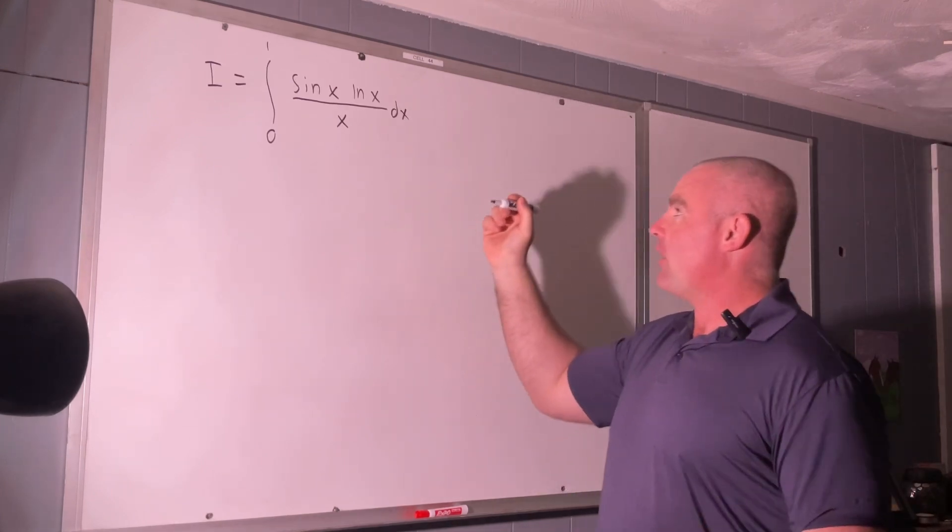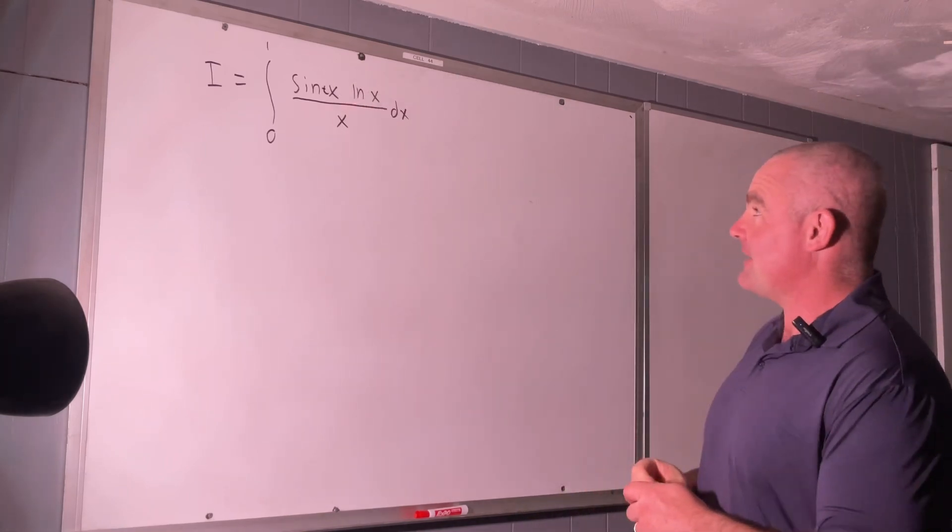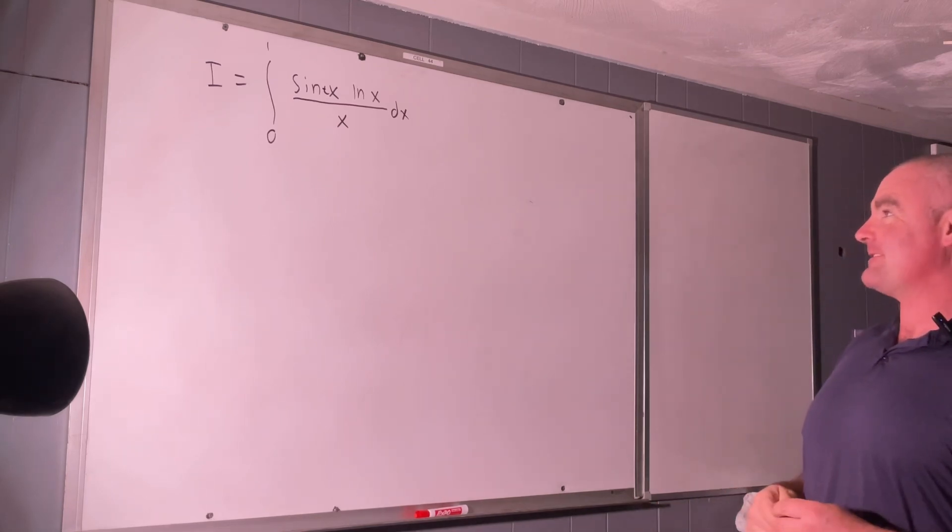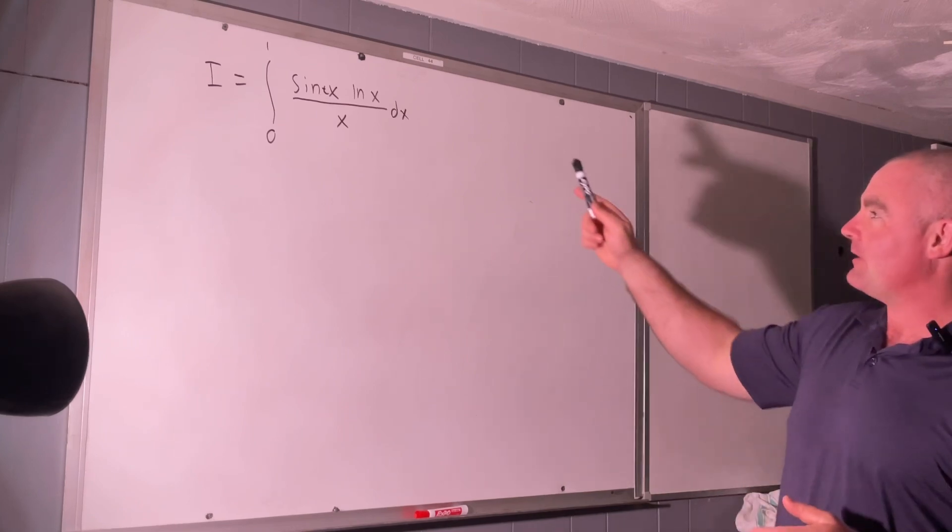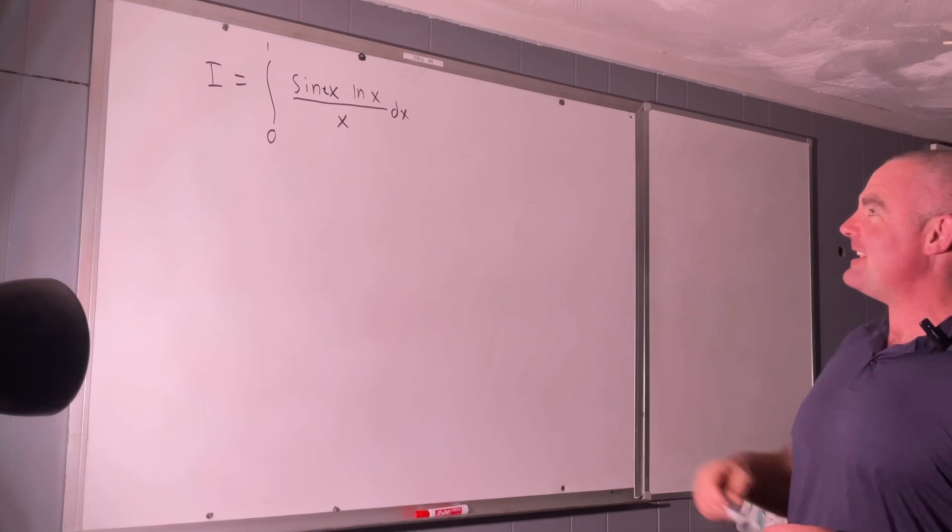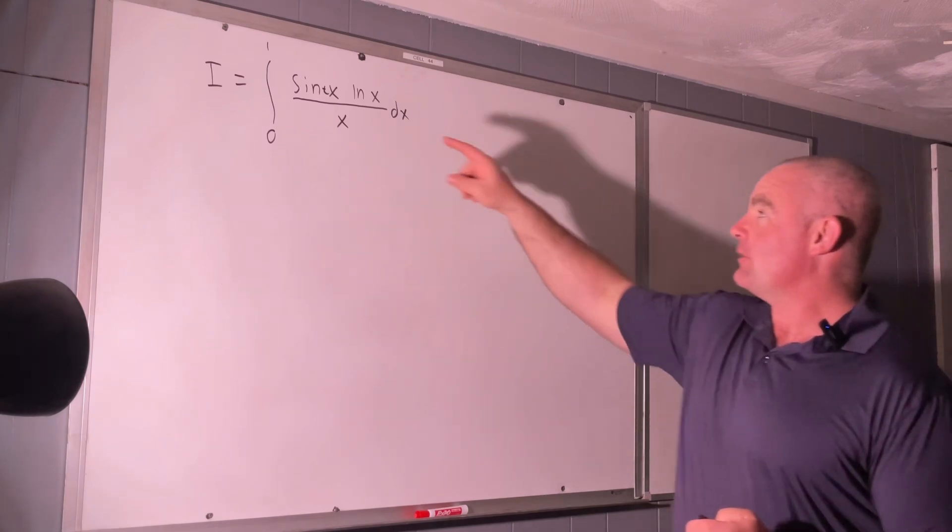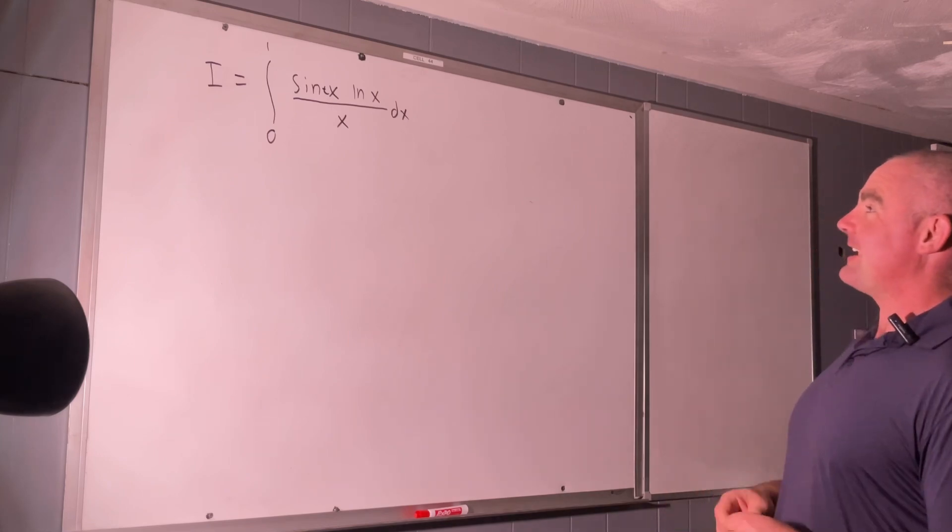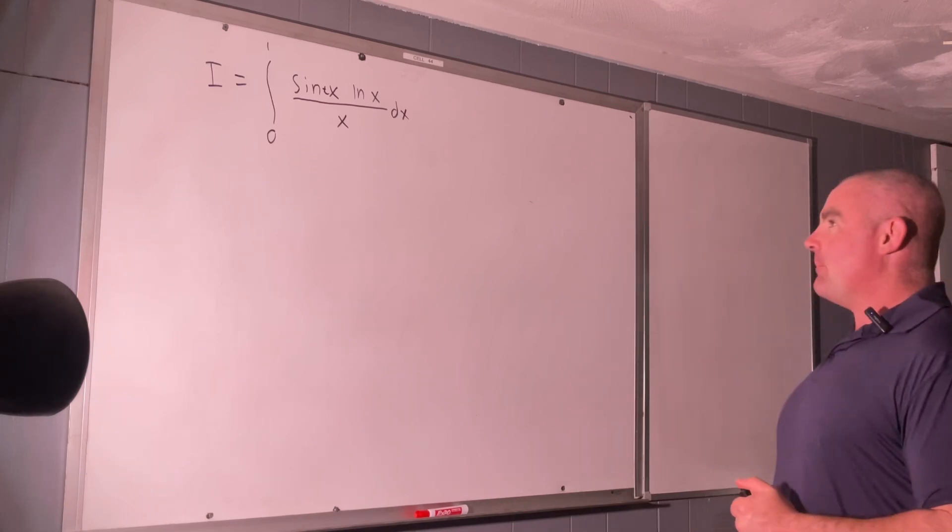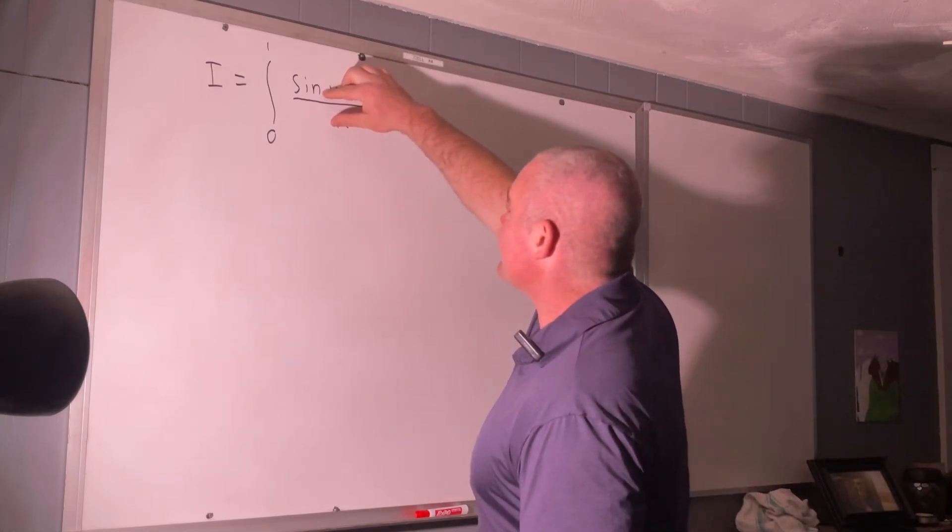The way I first tried to solve this was to re-parameterize it by inserting a t in front of that x, making it the integral from 0 to 1 of sin tx times natural log x over x dx. Taking a derivative of that function of t with respect to t in order to recover an x during the process of differentiation, which would cancel out that x, giving us integral from 0 to 1 of cos tx natural log x dx, and then trying to solve it from there. I didn't get very far with that, so this is what I did.